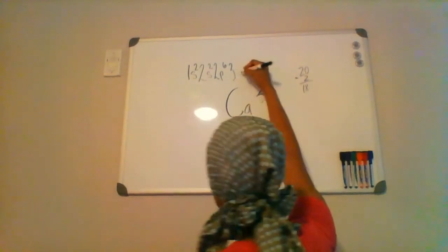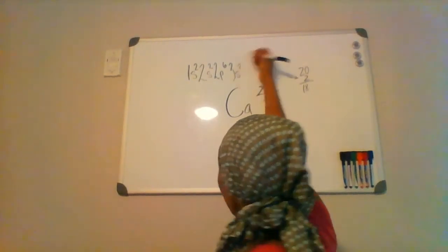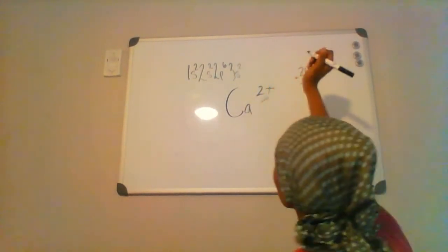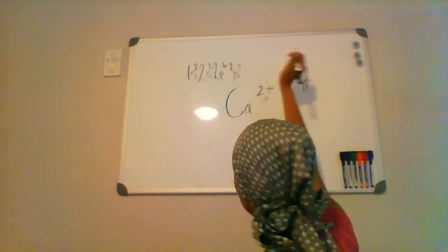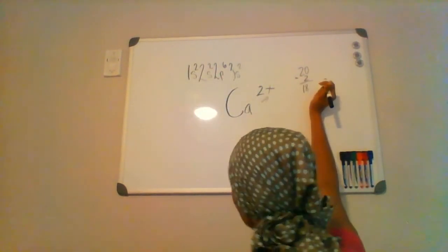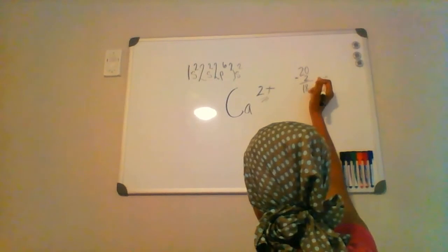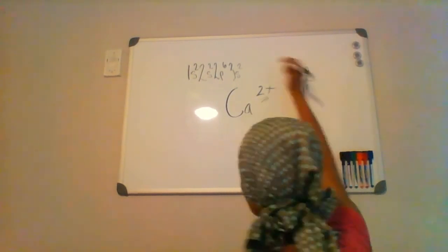And there's an s orbital holding a maximum of two electrons. And so far we have 12 electrons accounted for, so we need to account for six more.